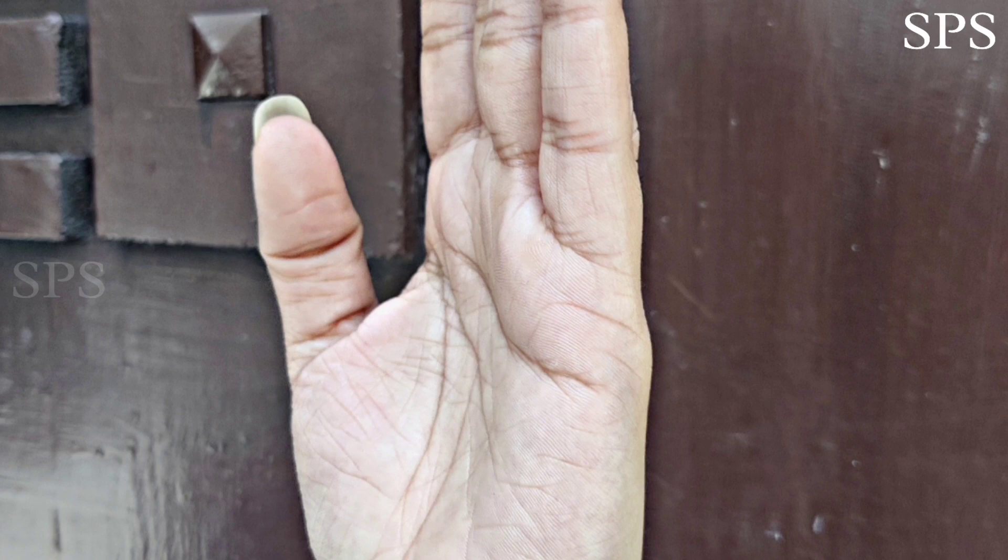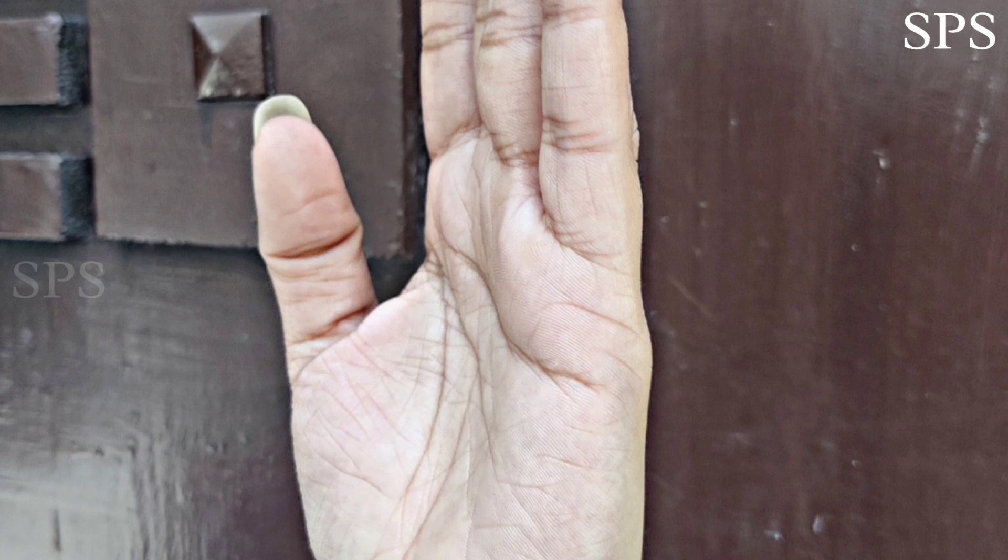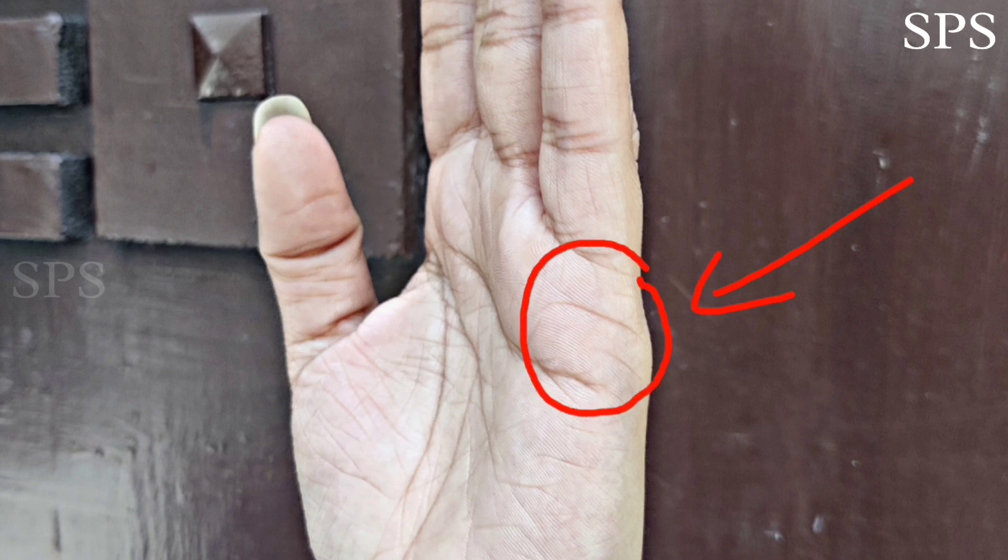Before starting the hand reading, I want to tell you an important thing. Boys read their right hand and girls read their left hand for accurate information. Let's go ahead. Take a look on this part of your hand. It's called mercury mount.